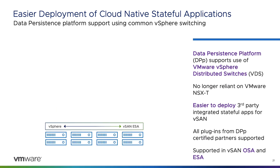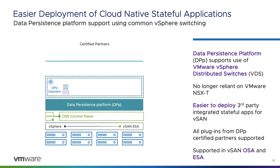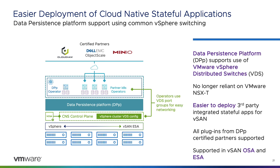In vSAN 7 Update 1, VMware introduced the vSAN Data Persistence Platform, or DPP, a framework to simplify the deployment and operation of modern stateful applications built for cloud-native architectures. It allows third-party ISVs to build solutions like S3-compatible object stores that run directly on vSAN. vSAN 8 Update 1 lowers the barrier in cost and complexity by making DPP solutions compatible with a common VMware vSphere distributed switch, so environments will no longer be required to use VMware NSX-T for network connectivity. This enhancement applies to both the vSAN OSA and the ESA for maximum flexibility.